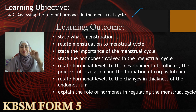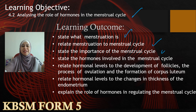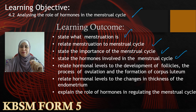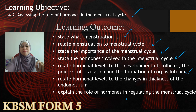The learning outcomes are: number 1, state what menstruation is; number 2, relate menstruation to menstrual cycle; number 3, state the importance of menstrual cycle; number 4, state the hormones involved in menstrual cycle; number 5, relate hormonal levels to the development of follicles, to the process of ovulation and to the formation of corpus luteum; number 6, relate hormonal levels to the changes in thickness of endometrium; and lastly, explain the role of hormones in regulating menstrual cycle.